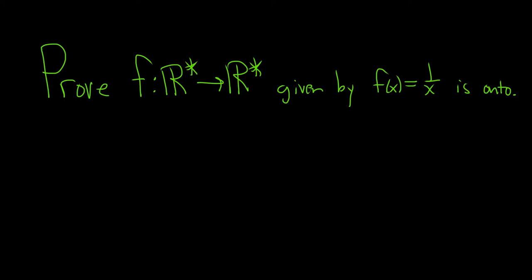So the set R star is the set of all non-zero real numbers. So it's the set of all x such that x is a real number and x is not zero. You can also write it as all the real numbers minus zero, so it's all non-zero real numbers.